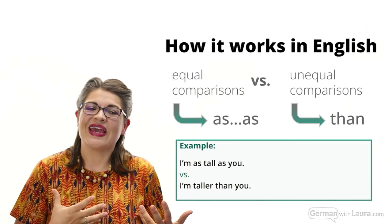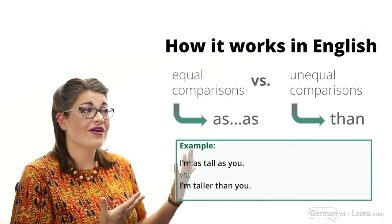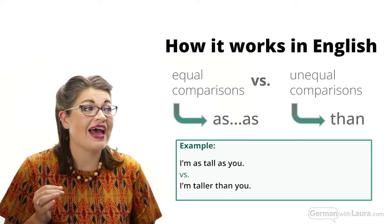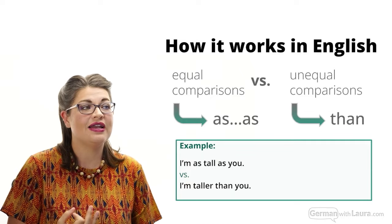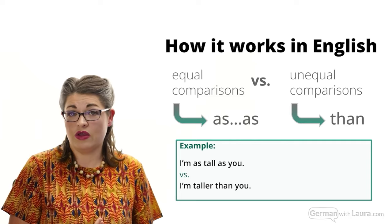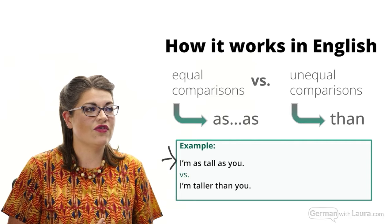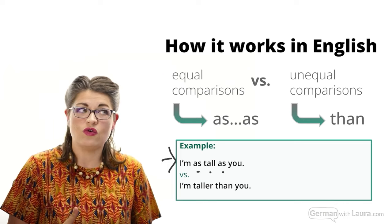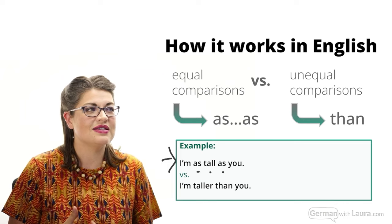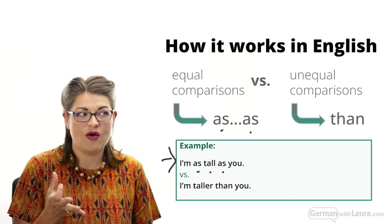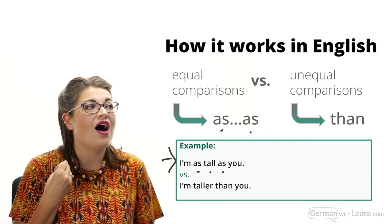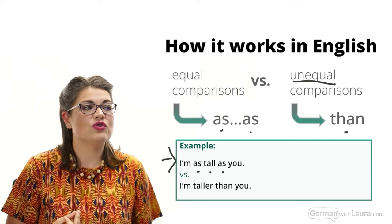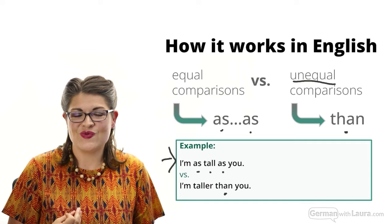In English, we can make either an equal comparison or an unequal comparison — that is the key difference. If we're making an equal comparison, we say 'I'm as tall as you' — the 'as...as' combo. If we're making an unequal comparison, we use the word 'than': 'I am taller than you.'